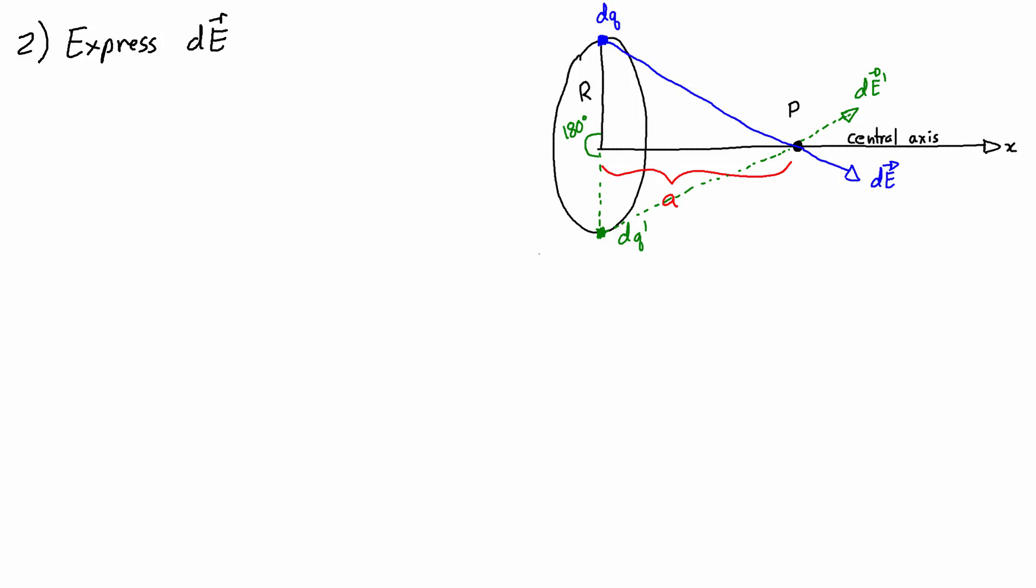The second part of the strategy is to express dE in terms of dq. Now you might remember that for a point charge, the electric field for the point charge is equal to kq over r squared times r hat. And if we treat dq as a point charge, which we can because dq is going to be very small, then I can just by extension write dE is equal to k times dq over r squared times r hat.